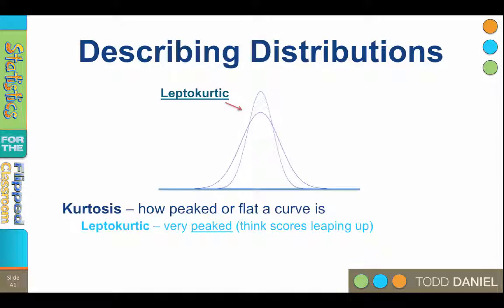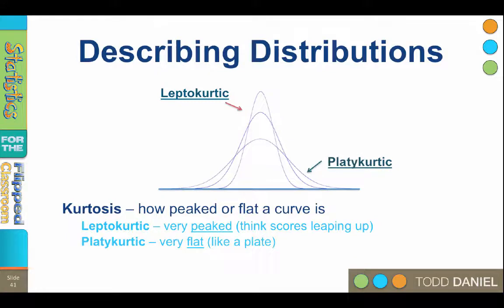When the scores are very spread out, the curve becomes flat, like a plate. We call this platokurtic. Plat rhymes with flat. Platokurtic is a flattened curve in the shape of a plate.